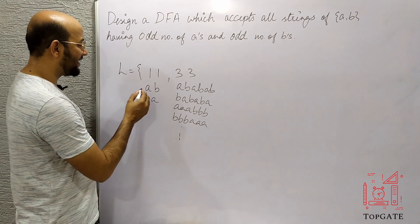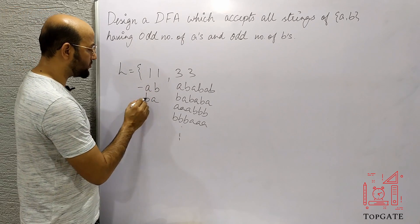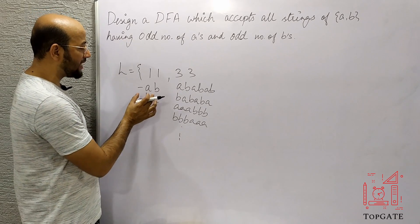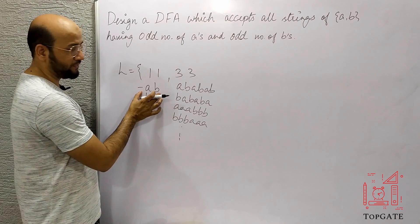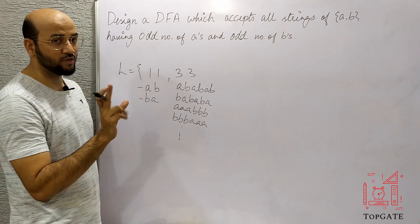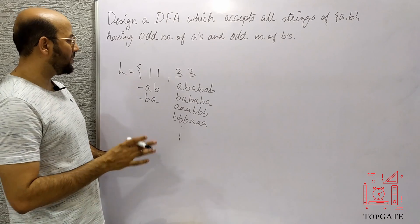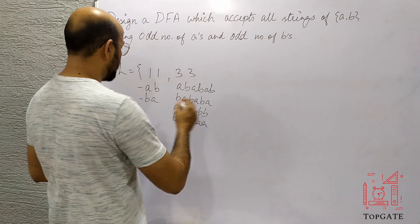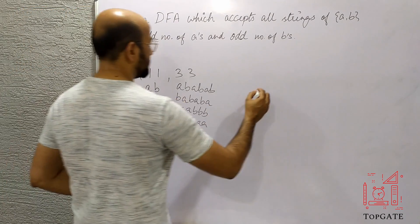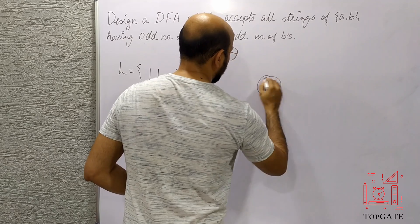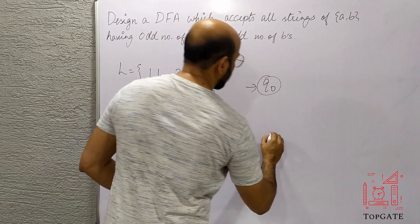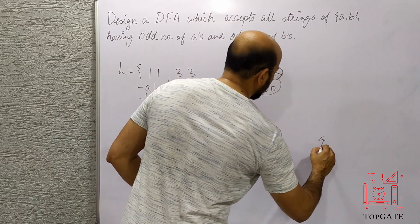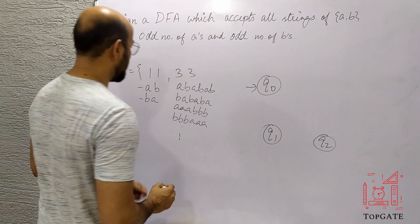Let's first design a DFA for the minimum string and then we'll see other options as well. In the minimum string we have length 2, so for length 2 I need at least 3 states — it can be 4 also, but at least 3. So let's design for the minimum string first: Q0 becomes my initial state, then Q1 and Q2.